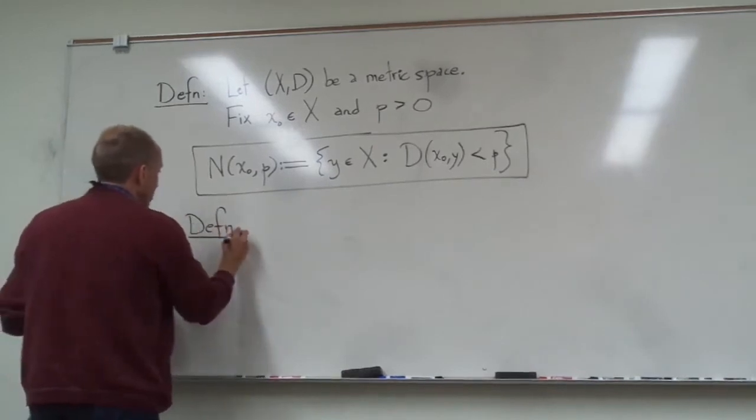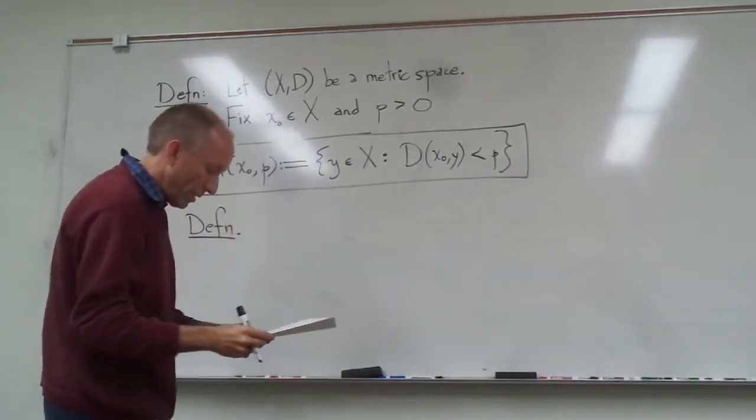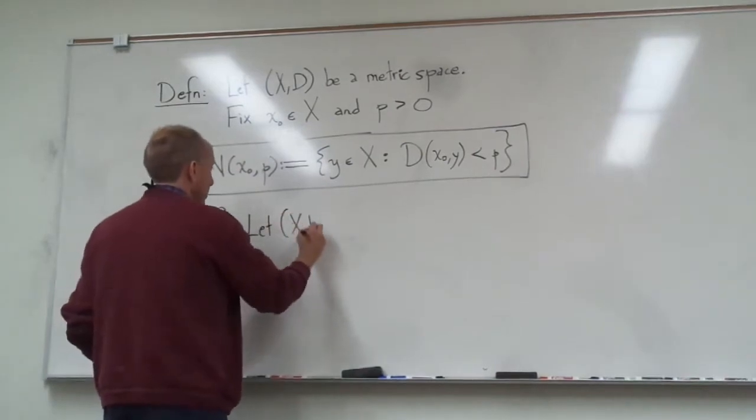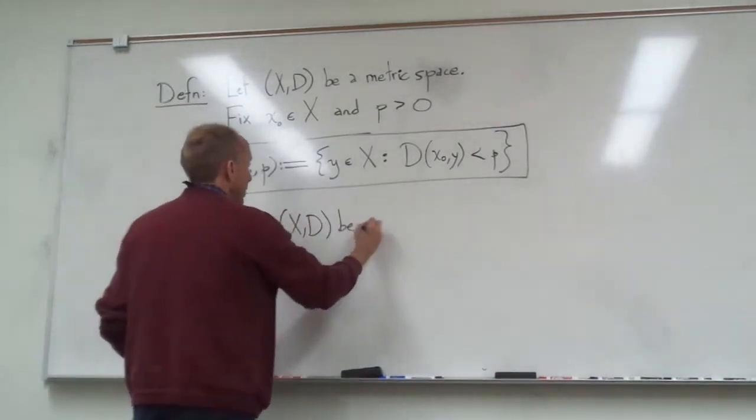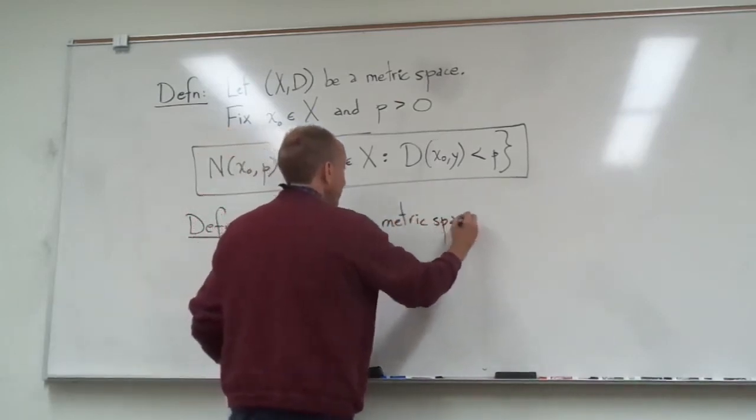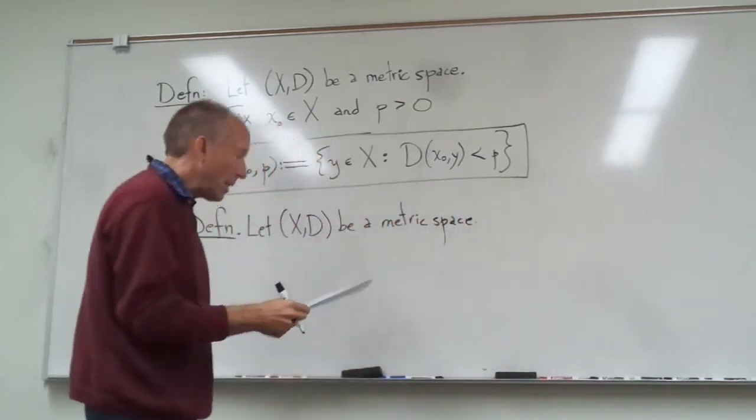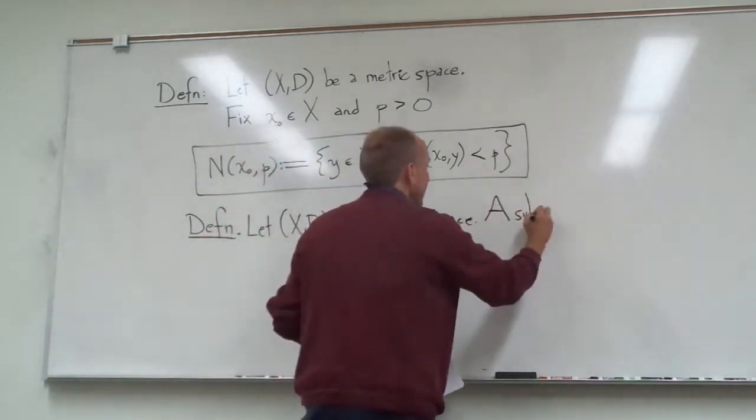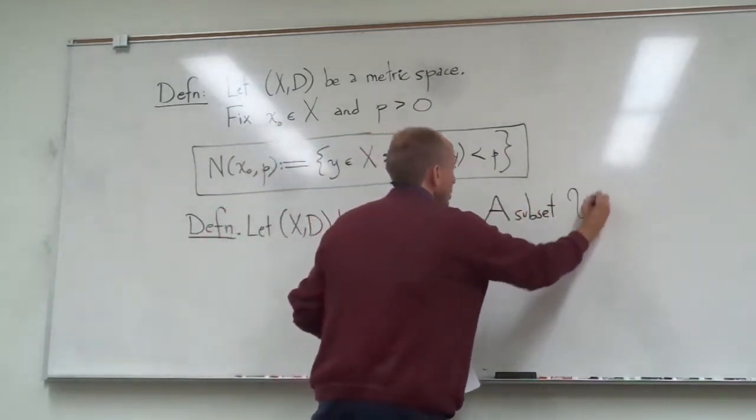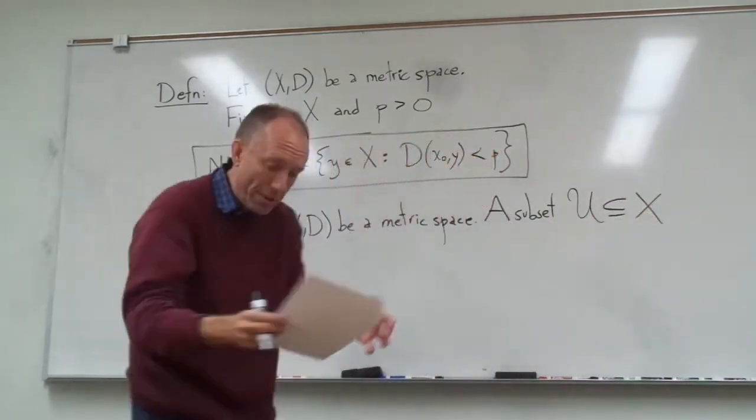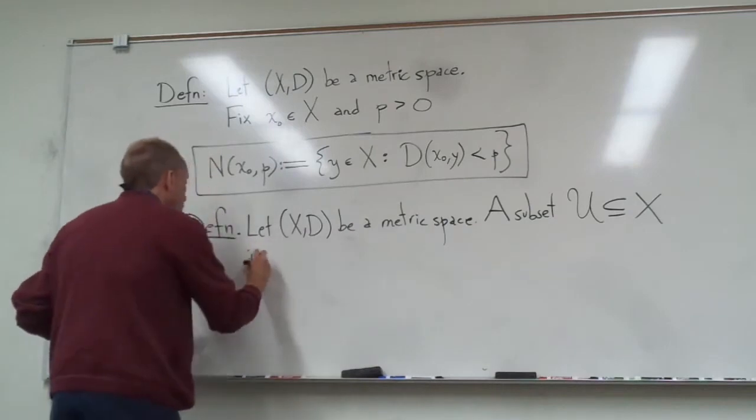I just want to basically give you the brief definition of that and a couple of examples. So this is the new part for the video. Basically, again, we're going to start with a metric space. Let X and d be a metric space. And then a subset, I'll call it u, that is inside of X. So this is a subset of the metric space. This is open.